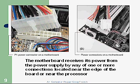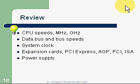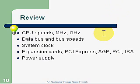In review: CPU speeds today are running anywhere between 3 and 4 GHz, which is one billion cycles per second, represented by GHz. There's also megahertz, which is one million cycles per second. Data bus and bus speeds — we're always trying to get faster bus speeds on our motherboard to move data faster and achieve higher performance. The system clock is the pulse used for timing in the computer. For expansion cards, there's a newer type called PCI Express, which has roughly doubled the speed for moving data and moved from a parallel to a serial bus. We also have AGP, PCI, and ISA.